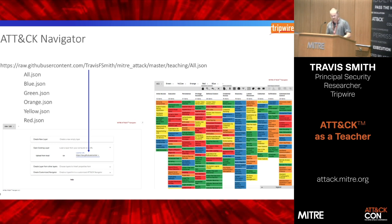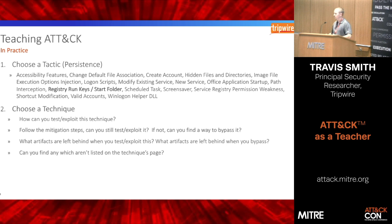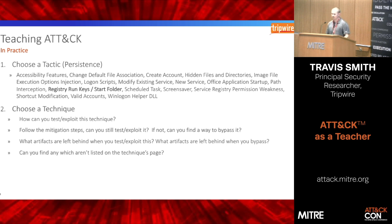So how do we actually use this? First, we choose a tactic — usually persistence, because that one is the easiest to teach. Then we choose one of the techniques within it, in this case registry run keys. We read the description and ask: what does it take to actually exploit this system? When you can exploit it, follow the mitigation steps provided, and are you still able to exploit it with your current techniques? Are there ways to bypass it? And whether you can exploit it before or after the mitigation steps, what artifacts are left behind? Can you find anything not listed on the ATT&CK page? Because we like to provide feedback to ATT&CK on all these things.